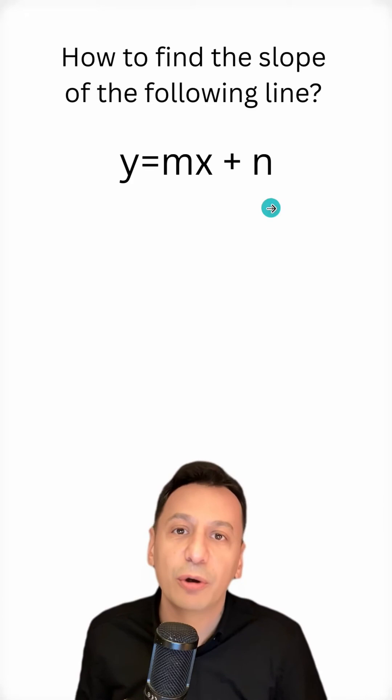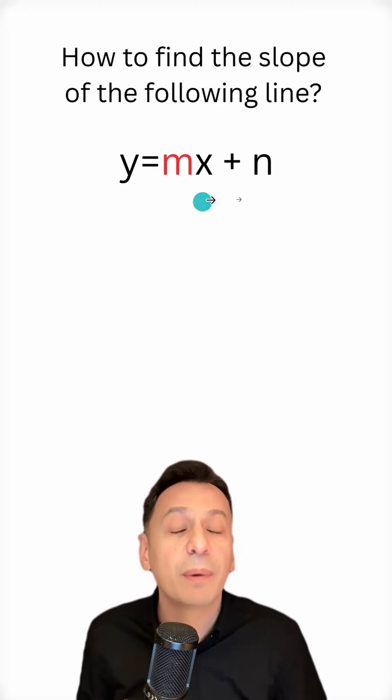Actually, we can state the slope of this line right away. Here, the coefficient of x, which is m, will give us the slope of this line. But why is this the case? In this video, we will examine this.